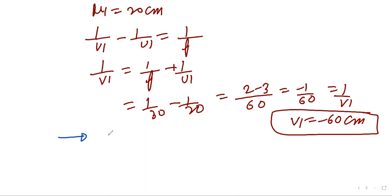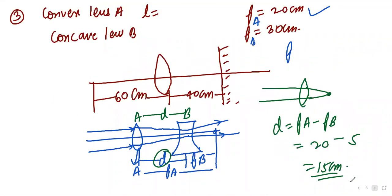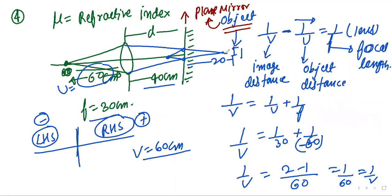The final virtual image is formed at 60 cm from the lens, which is 20 cm behind the mirror. So the final image distance is 20 cm.